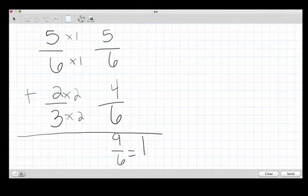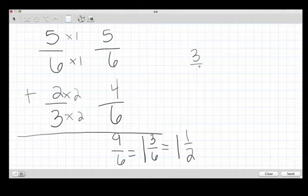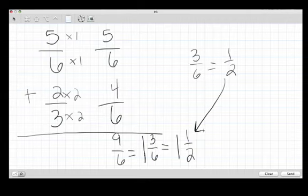So 6 goes into 9 one time with 3 left over. And we're in sixths. We check to see if it can be reduced. And it can. So 1 and 1 half. We reduced 3 sixths equals 1 half. And that's how we got our 1 half. So that's adding fractions with unlike denominators.